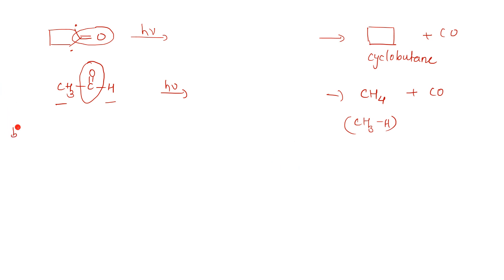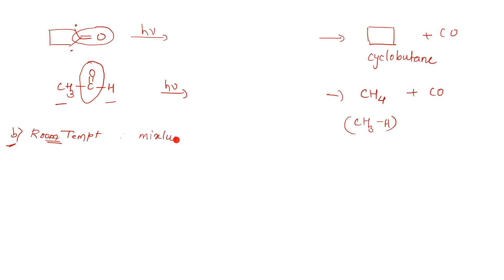I told you there are two types of Norrish 1: one at high temperature and one at room temperature. Most of the time, if nothing is mentioned, you go for the high temperature reaction where you just remove that C=O group. Room temperature reactions are not preferred because you get a mixture of many products which are difficult to separate.